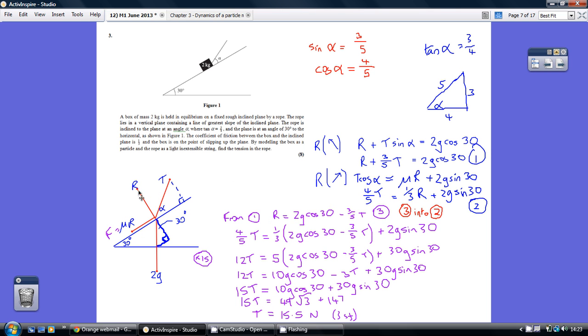So remember what we've got, we've got the normal reaction perpendicular to the slope, we've got the tension in the string being pulled, we've got the weight going straight down and we've got the friction in the opposite direction to the potential motion, so the friction going down the slope. So resolving diagonally right to left,